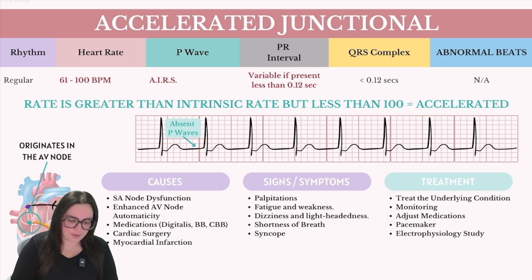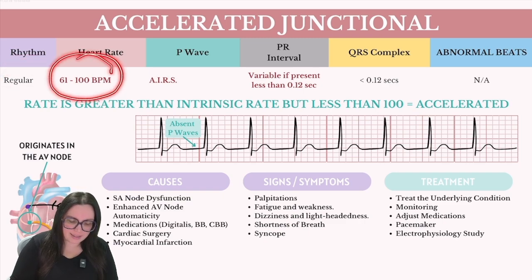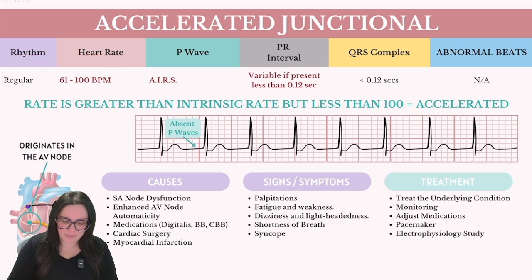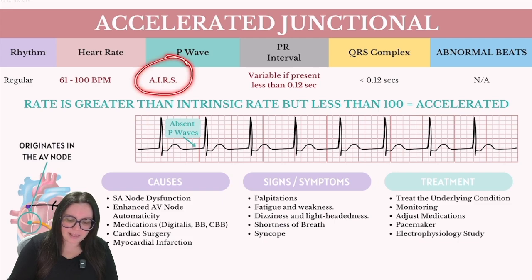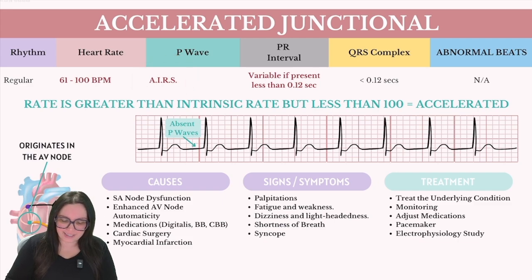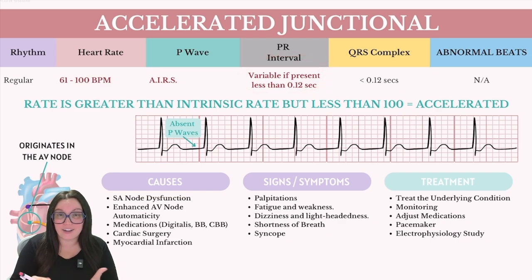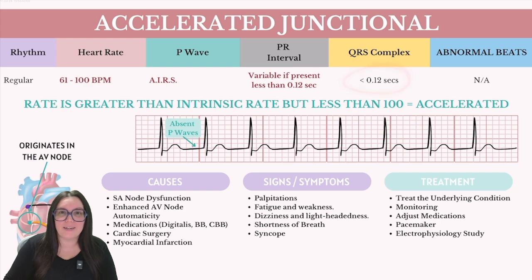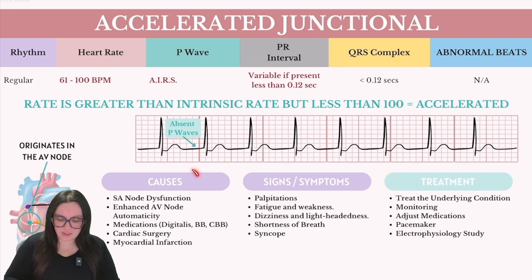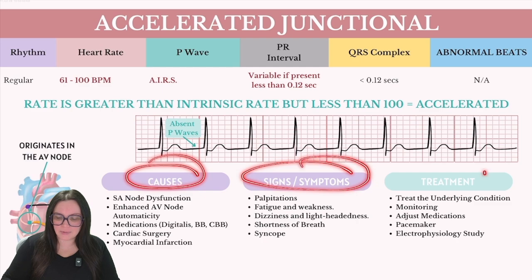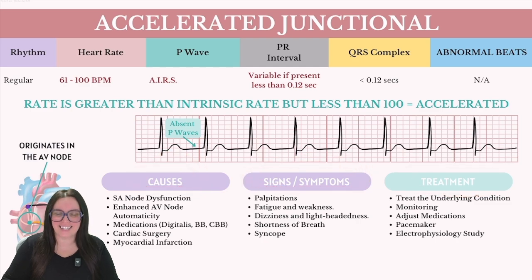So what's going on here? The rhythm is going to be regular. Our heart rate is going to be a little bit faster — 61 to 100 beats per minute. The P wave is going to remain the same; it has to meet that AIRS criteria. The PR interval is going to be variable depending on if it's there, and if it is, it will be less than 0.12 seconds. The QRS complex is going to be narrow and normal, and we're not going to see any abnormal beats. The causes, signs and symptoms, and treatments are going to remain the same.